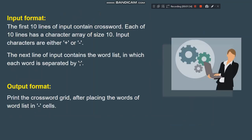For the input format, we have 10 lines and each of these lines contains plus or minus signs. The next lines contain the word list. The number of words is not necessarily equal to the order of the matrix — the words can be of any number, more or less. The output format requires printing the crossword grid after placing the words of the word list in the minus cells.